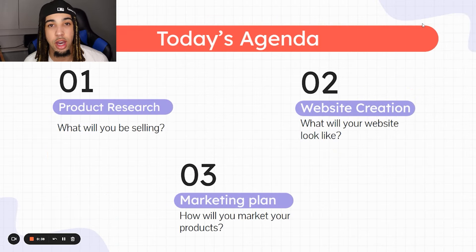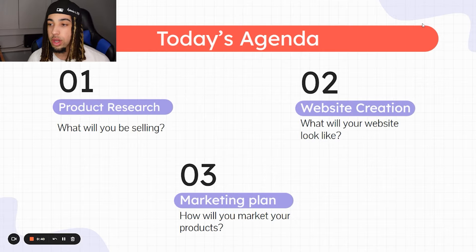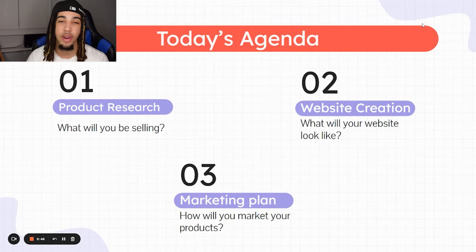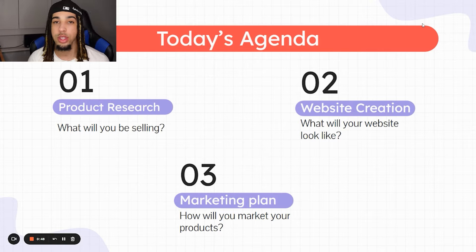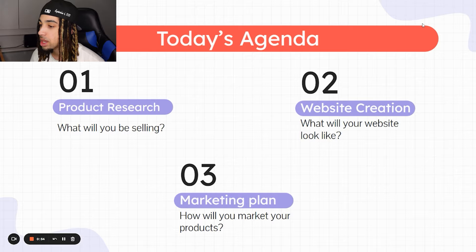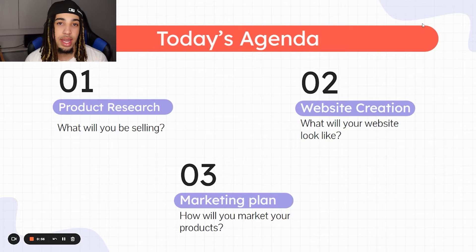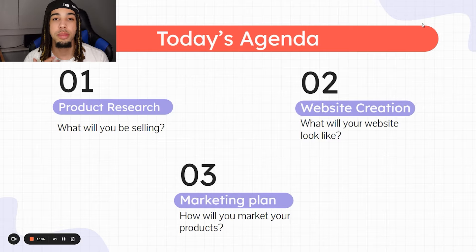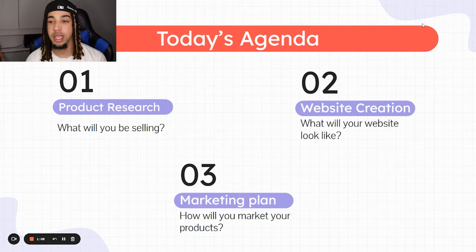This is essentially what the agenda of this video is going to look like. First thing we're going to be covering is product research — what products are you going to be selling and how you can actually find winning products. Second part: website creation — what your funnel is going to look like, what your offers are going to look like, and how you're going to create something that can actually convert at its highest potential. Third section: marketing plan. This is free, so you obviously aren't spending money on advertising — how are you going to be acquiring customers and generating traffic?